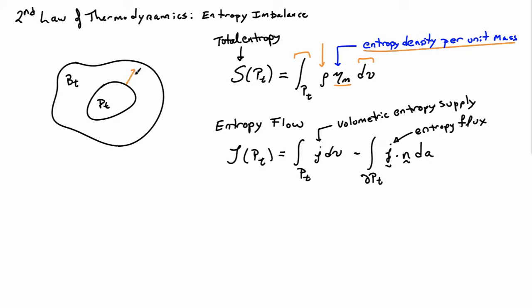If I have a unit normal n, I can have a flux of entropy, just like I have a heat flux. So that will be j, the vector j there. And j dotted with n gives me the entropy that is leaving the body, or the part of the body that I'm interested in here. That's why there's a minus sign here.